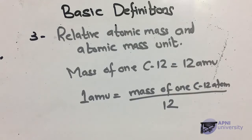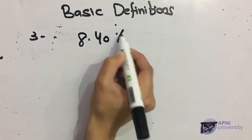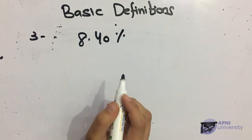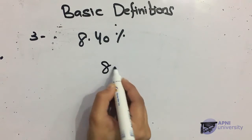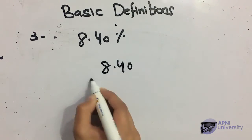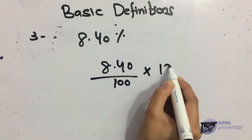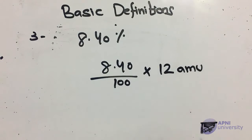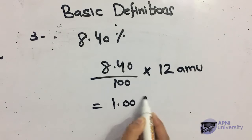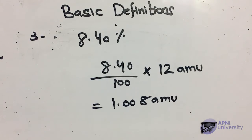We will find out the percent of hydrogen atom mass: 8.40 divided by 100, multiplied by 12 amu. We get 1.008 atomic mass unit (amu).